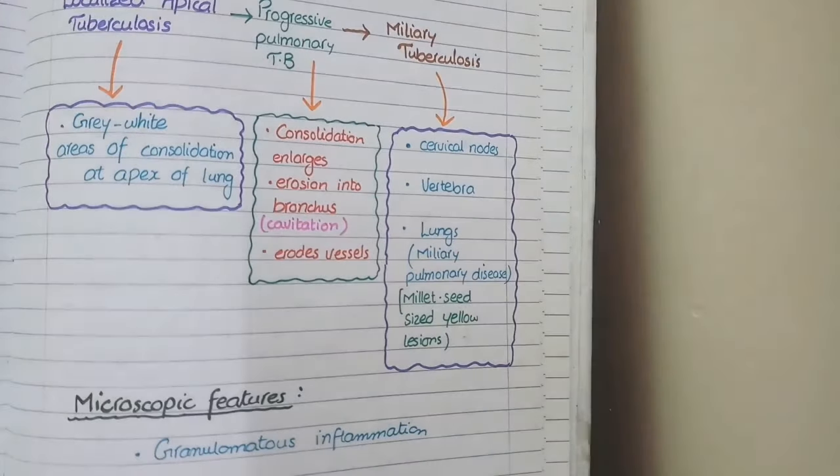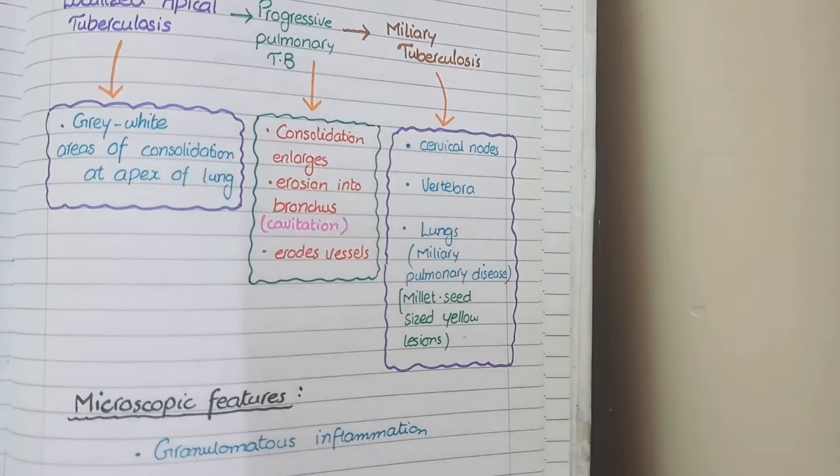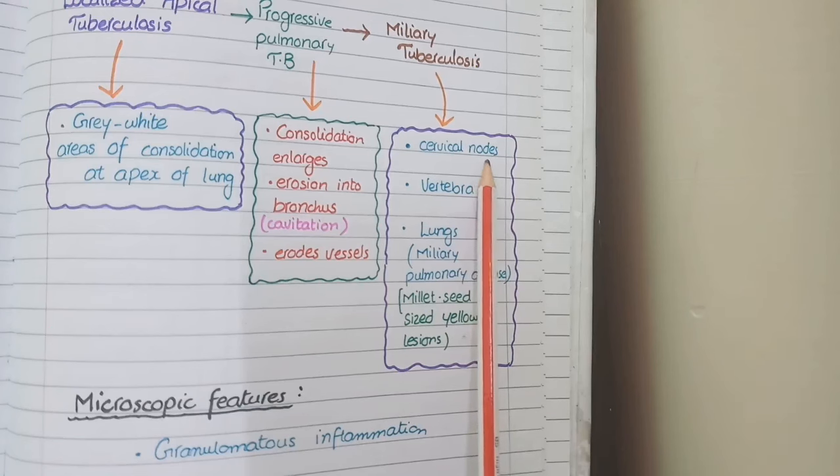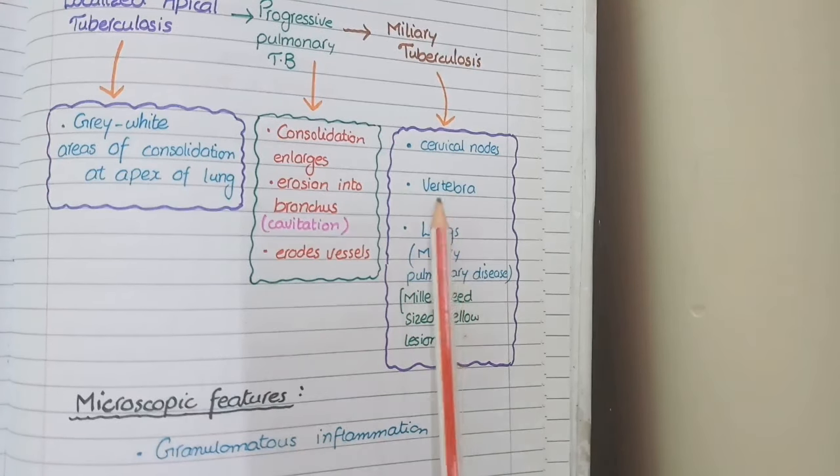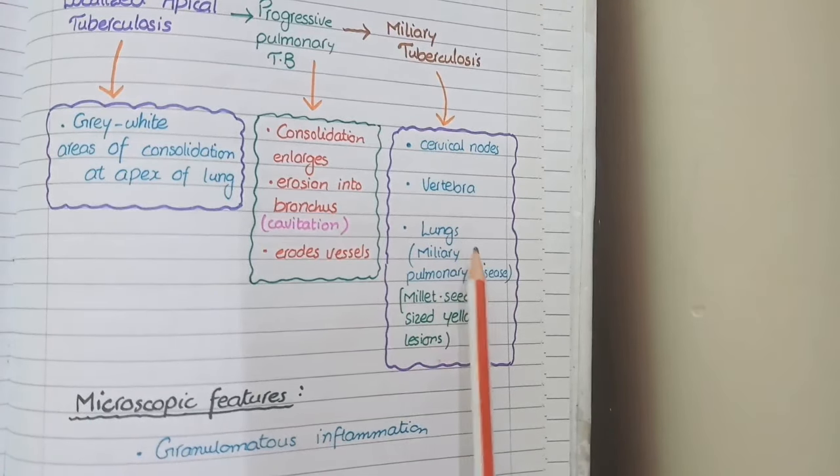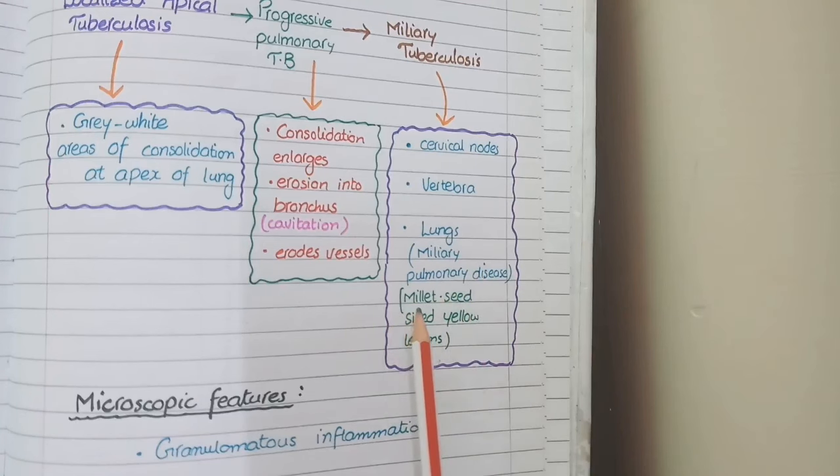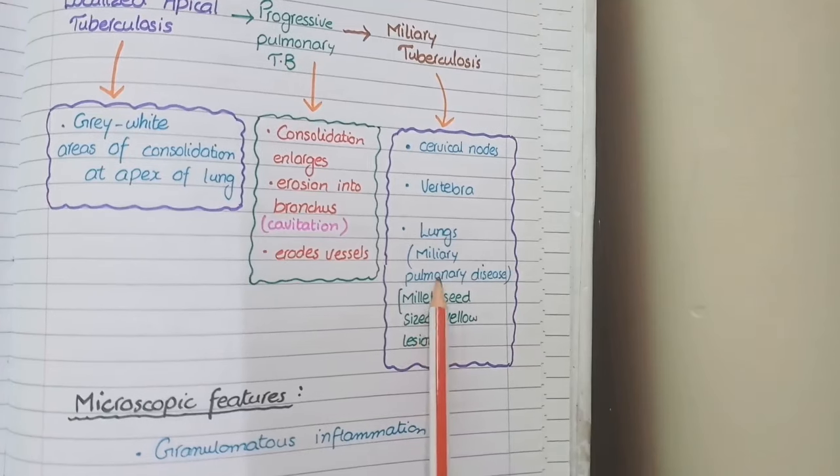The third form or third stage of secondary tuberculosis is called miliary disease in which tuberculosis disseminates into multiple organs. It can spread to cervical lymph nodes causing tuberculous lymphadenopathy. It can spread to vertebra causing Pott's disease. It can move back into the lungs through circulation and the lesions which will be produced on lung would be small and millet seed sized. This case is known as miliary pulmonary disease.